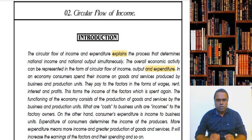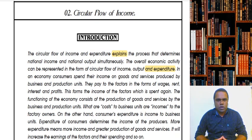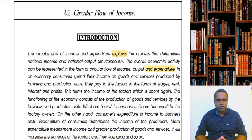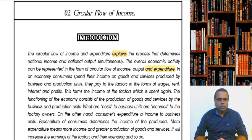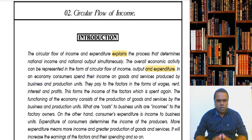Hello friends. After discussing the first chapter, that's introduction to macroeconomics, we are moving towards the second chapter. The name of the topic is 'Circular Flow of National Income.' Two words to highlight here: circular flow, and income. Circular flow tells the direction in which income in the economy flows from one place to another. Income basically stands for national income, not individual income.